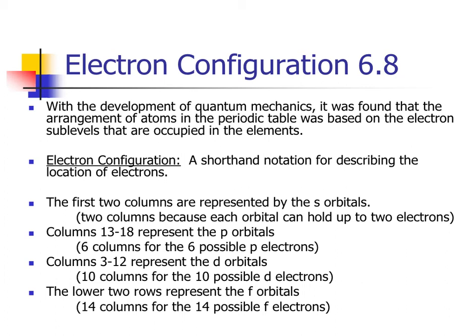Columns 13 through 18, or 3A through 8A, but I prefer the IUPAC numbering system, that would be 13 through 18. That is known as the P block. The P block is 6 wide. The P orbitals had three orientations in space. Each orientation can hold two electrons. Three times two is 6.